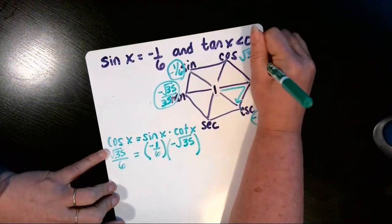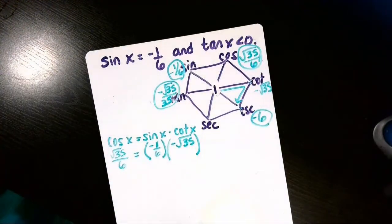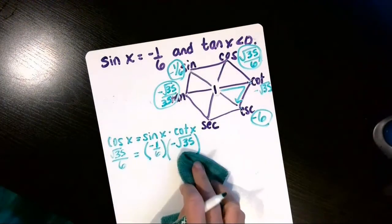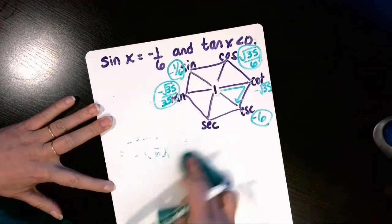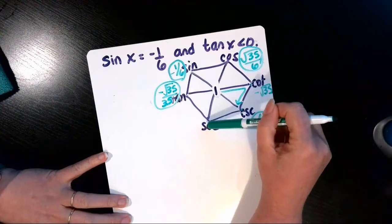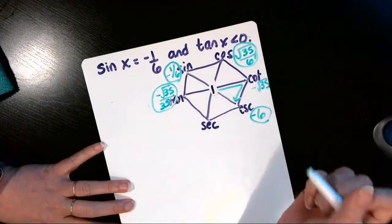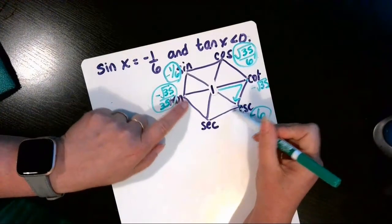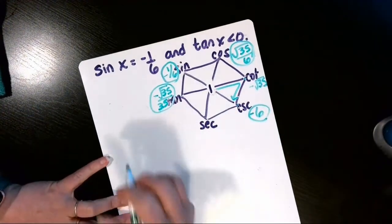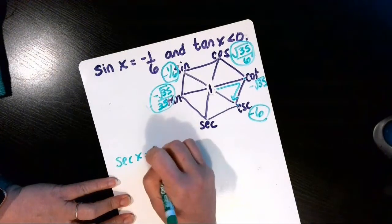And then the last one that we need to find is secant. You could do the reciprocal identity if you wanted to and rationalize the denominator, or I'm just going to go ahead and do another product identity here since it makes a hinge. So secant of x is equal to the product of the tangent times the cosecant.